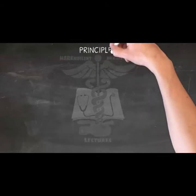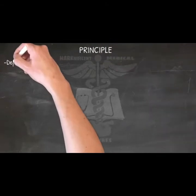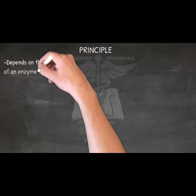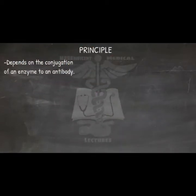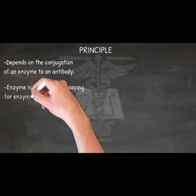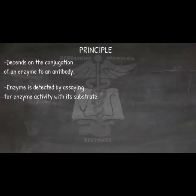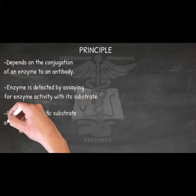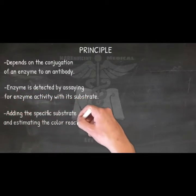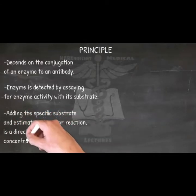Principle. Enzyme immunoassay, which has many variations, depends on the conjugation of an enzyme to an antibody. The enzyme is detected by assaying for enzyme activity with its substrate. To measure antibody, known antigens are fixed on a solid phase like a plastic microtiter plate, incubated with test antibody dilutions, washed, and re-incubated with an anti-immunoglobulin labeled with an enzyme. Enzyme activity, measured by adding the specific substrate and estimating the color reaction, is a direct function of the concentration of antibody bound.